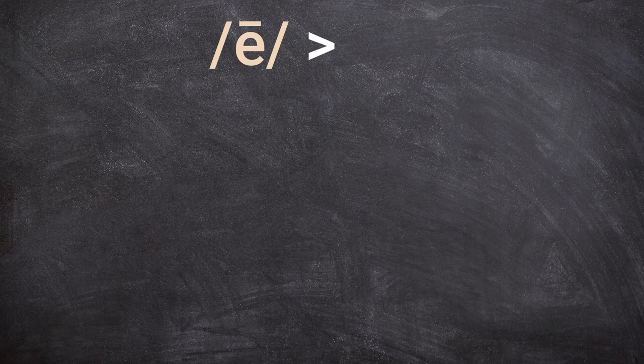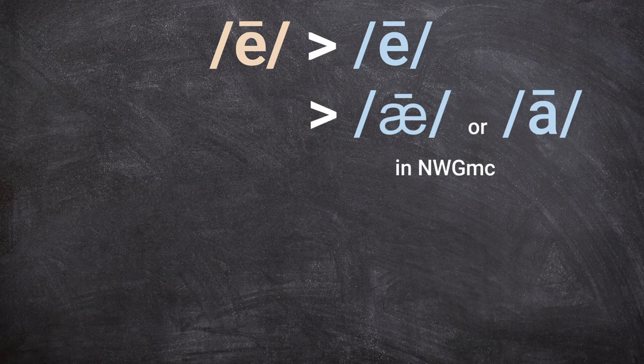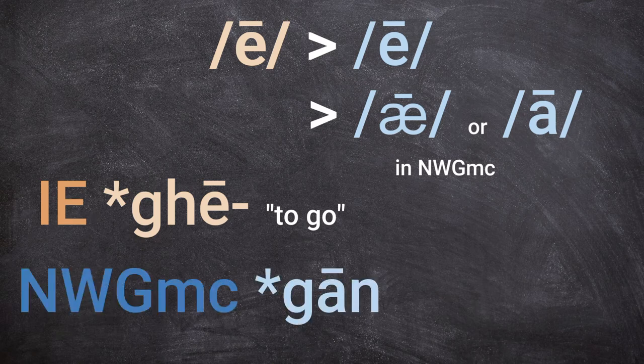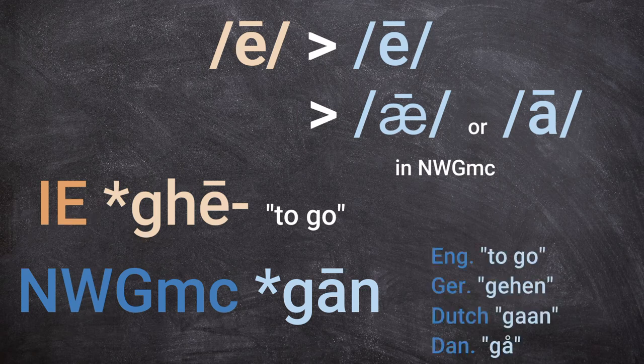Another sound that developed in a rather confusing way is Ē (long E). It seems there were no important changes initially, but then it opened to E or A in West and North Germanic. For example, Indo-European *gē- meaning 'to go' became, in an early stage of Northwest Germanic, 'gān,' with different vowel sounds in the modern languages.